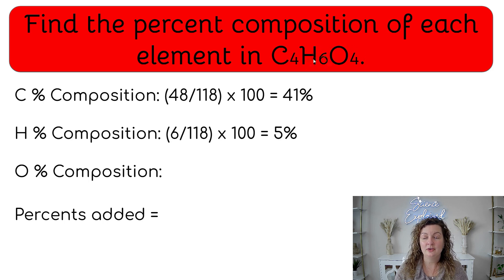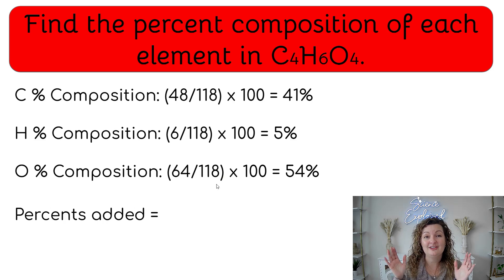Even though it looks like there's a lot going on, it's a very small percentage of it, right? Oxygen, we ended up getting 64 grams, and that was out of 118. Notice our bottom numbers are always the same because the compound has the molar mass of the total of all of them, right? So that's not going to change. Multiply that by 100, and we get 54% for oxygen.